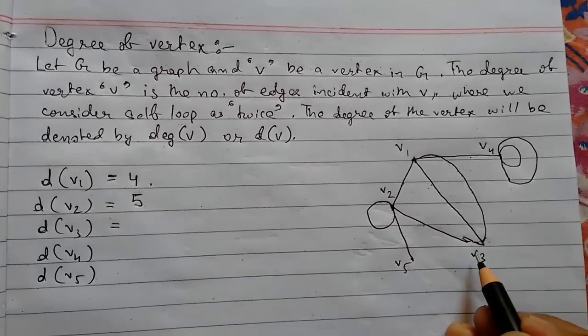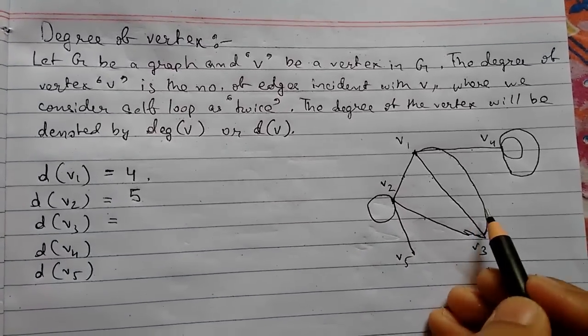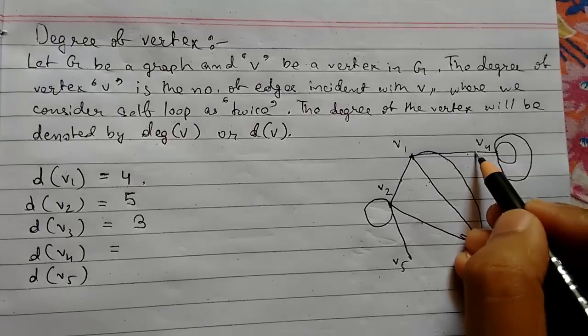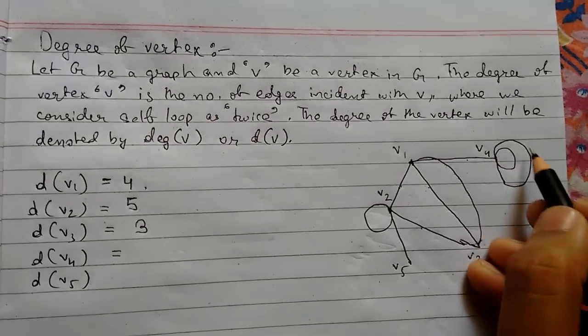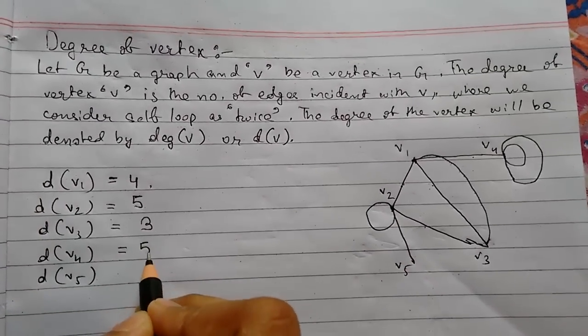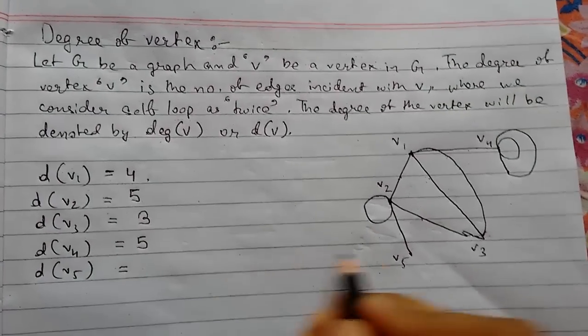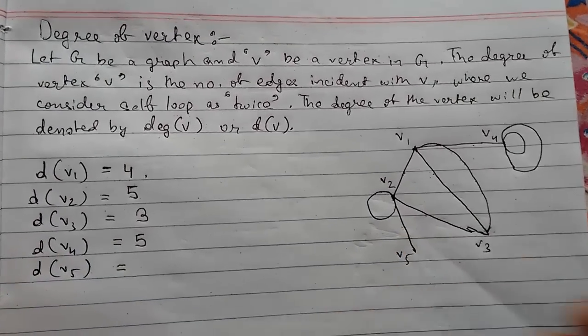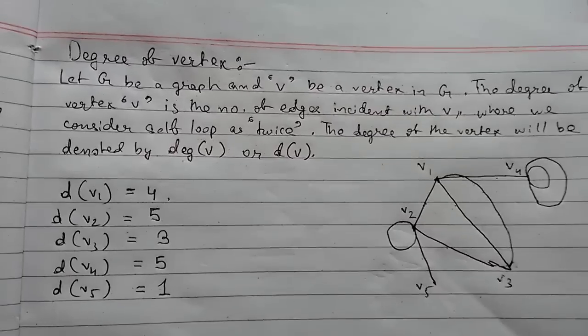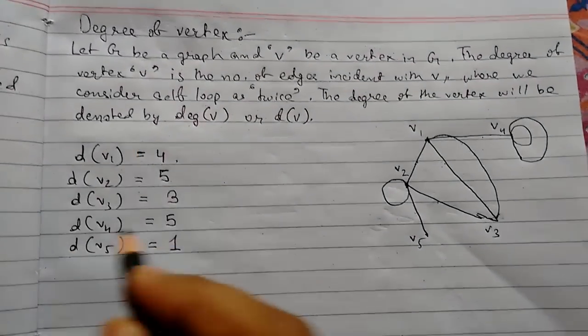Now for vertex 3, this will be 1, 2, 3. For vertex 4, this will be 1. For vertex 5. As there is no other edge incident to it. So this is the degree of vertex.